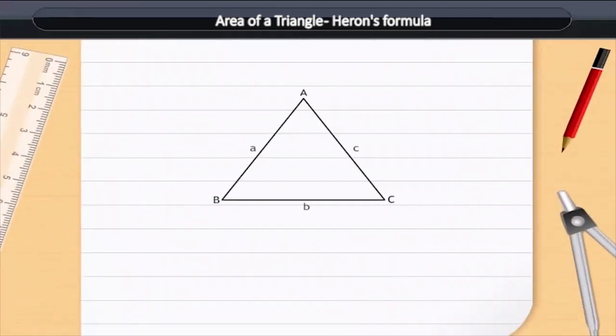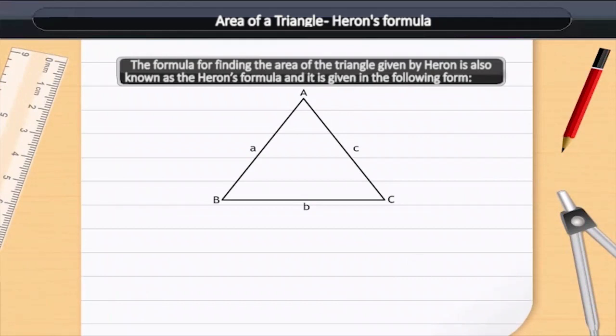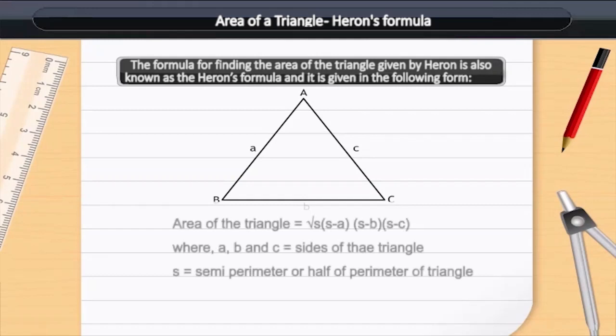Area of a Triangle: Heron's Formula. The formula for finding the area of the triangle given by Heron is also known as the Heron's Formula and it is given in the following form. Area of the triangle is equal to square root of S multiplied by S minus A multiplied by S minus B multiplied by S minus C.